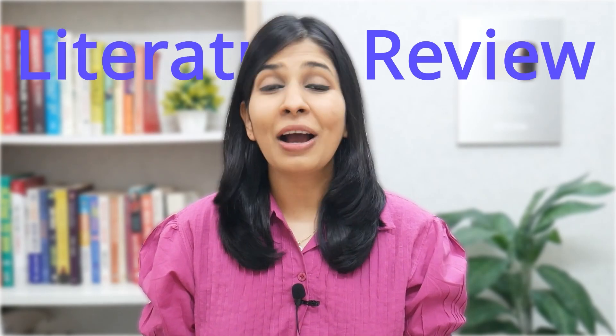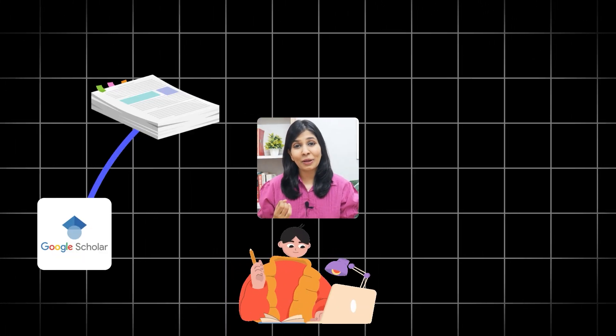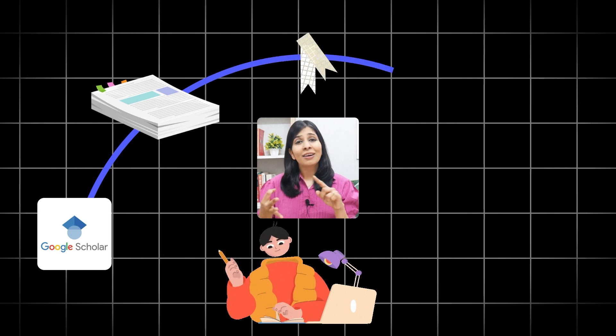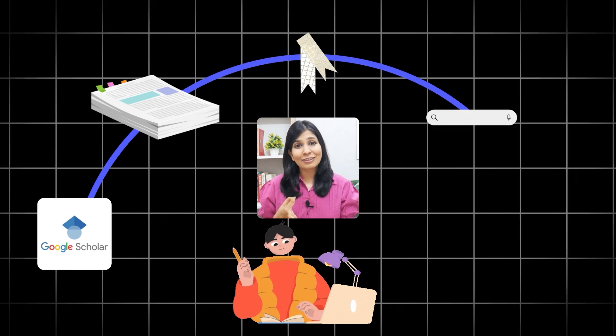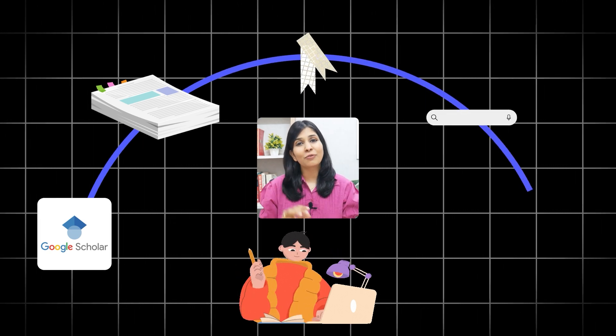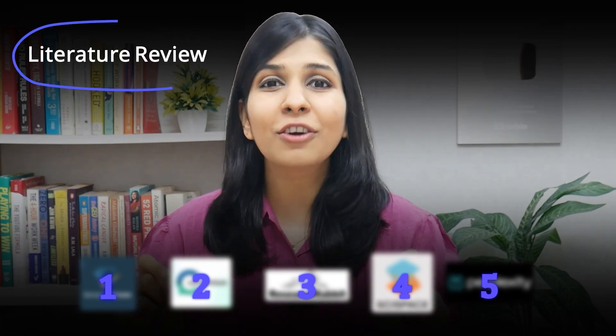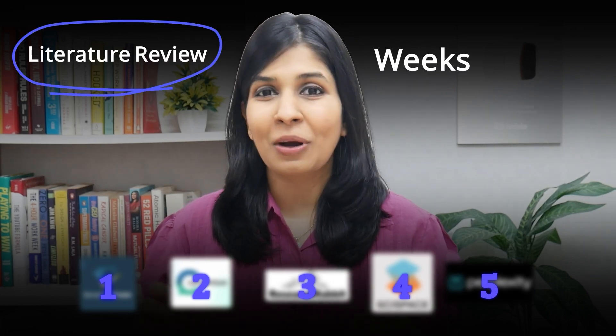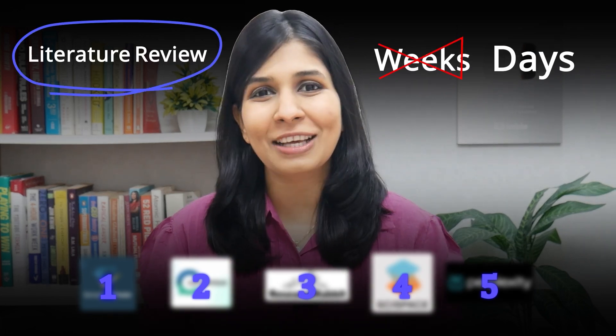If you've ever done a literature review, I'm sure you would have spent hours on Google Scholar skimming through papers, bookmarking them, googling technical jargon and spending weeks trying to find answers to your research questions. But what if I told you that now with AI tools, you can complete your entire literature review not in weeks, but in a few days.